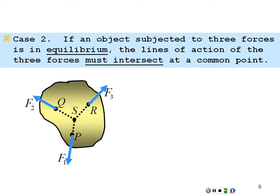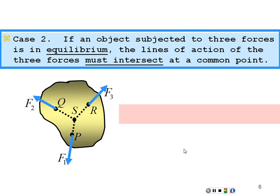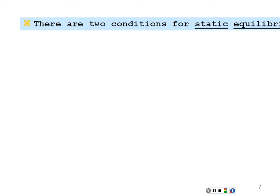Here's case two. If an object is subjected to three forces, to be in equilibrium the lines of action of the three forces must intersect at a common point. So for an object acted on by exactly three forces, somewhere the lines of action of those three forces must intersect at a common point. When this happens, we say the forces are concurrent — they intersect at the common point.